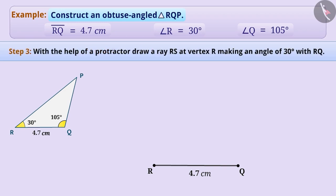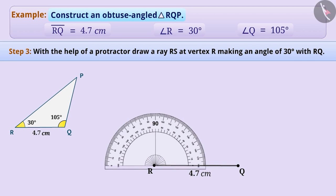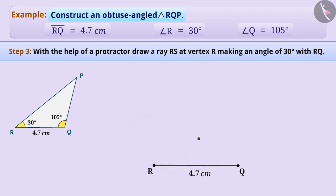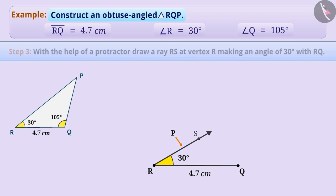Step 3: With the help of a protractor, we will construct an angle of 30 degrees at vertex R. We will draw a ray at vertex R making an angle of 30 degrees with RQ. We will label the ray RS. By the given condition, the vertex P of the triangle must be somewhere on the ray RS.